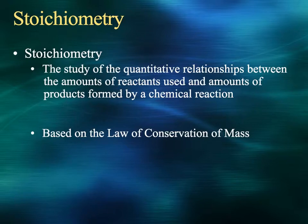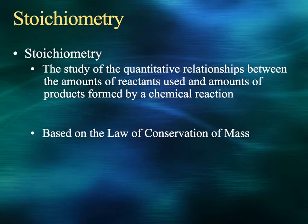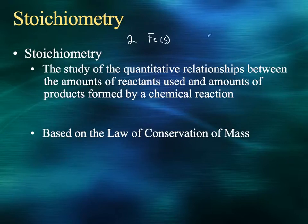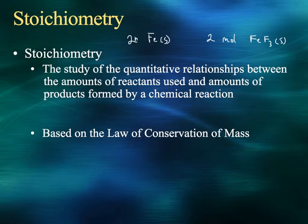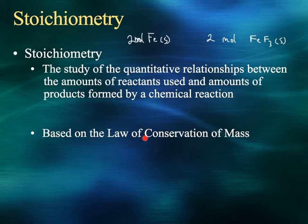Stoichiometry, if you need a definition, is the study of quantitative relationships between the amounts of reactants used and the amounts of products formed by chemical reactions. So if you have two moles of iron metal, that can produce two moles of iron(III) fluoride. It tells you relative amounts, and that all goes back to the coefficients in front of your reactants and products. This is all based on the law of conservation of mass, which we talked about earlier this semester.